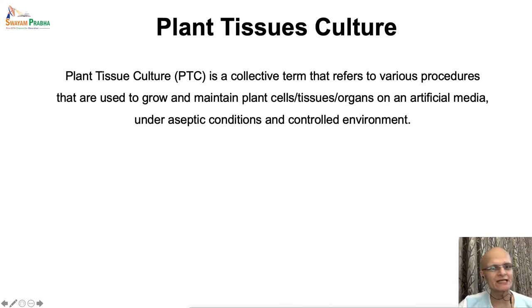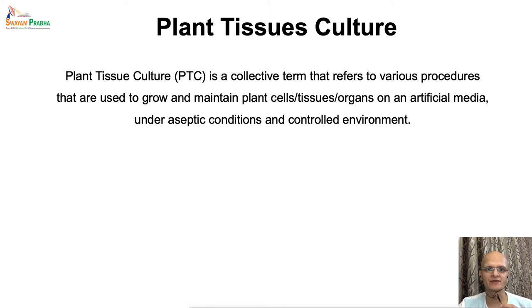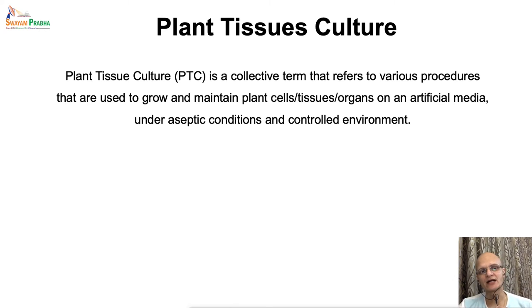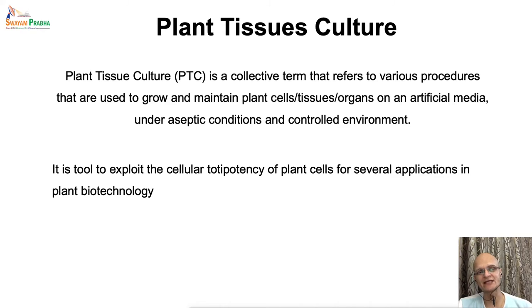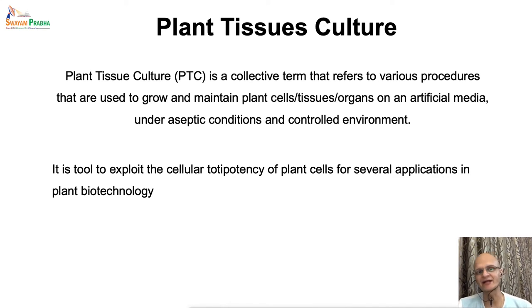Plant tissue culture is a collective term that refers to various procedures that are used to grow and maintain plant cells, tissues, or organs on an artificial media under aseptic conditions and in a controlled environment. Basically, it is a tool to exploit the cellular totipotency. In the last lecture, we learned about totipotency — how each and every plant cell is totipotent, that is, capable of regenerating into a whole plant body.